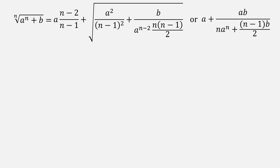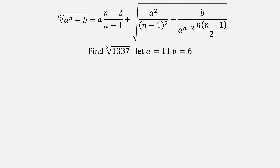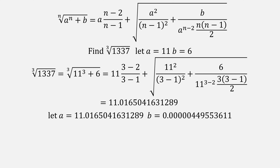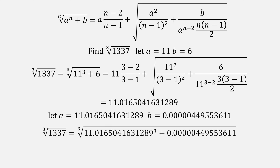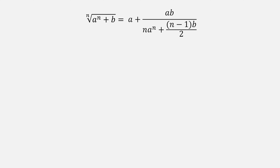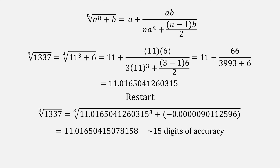Coming up with one irrational and one rational form, let's look at the irrational. Using our earlier example of 1337, and using the values of 11 and 6 for a and b, we plug everything in and get this number. Now we can repeat the calculus using that number for a, and whatever would be the remainder we call b. Plugging everything in, we get a number accurate to 15 digits. The same can be done with the rational form, which also takes two iterations to find 15 digits of accuracy.